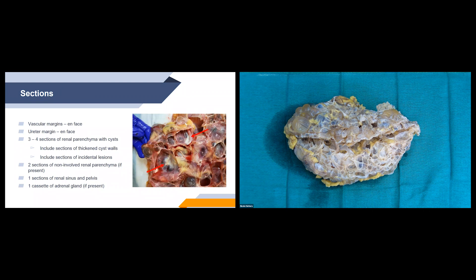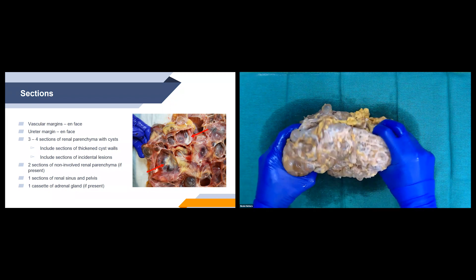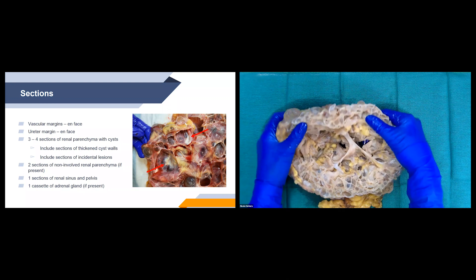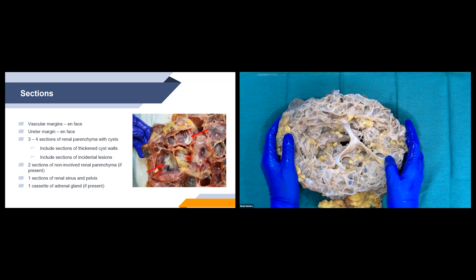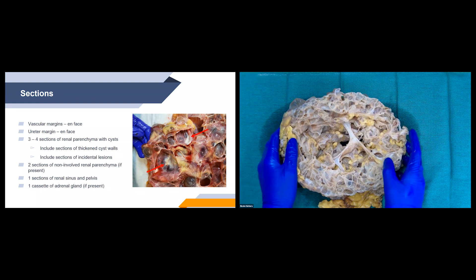For sections on these kidney cases: vascular margin on FAS, ureteric margin on FAS, and three to four sections of renal parenchyma with cysts — including any areas where cyst walls are thickened or show calcification. We take sections of any incidental lesions, two sections of non-involved kidney parenchyma if present, one section of renal sinus and pelvis, and one cassette of the adrenal gland if present.